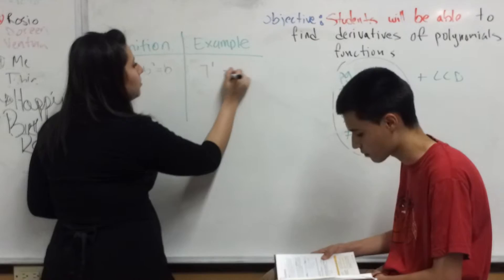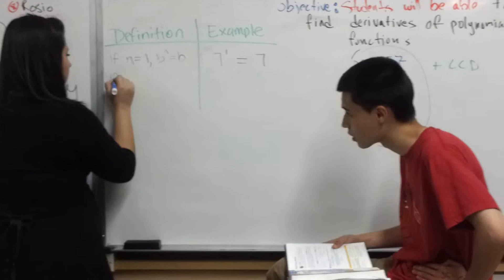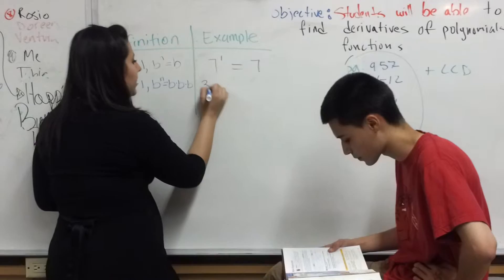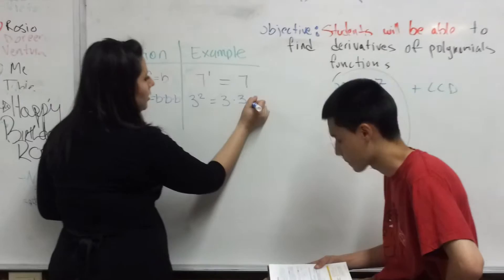if n is greater than 1, then b to the n equals b times b times b... So for example, 3 squared equals 3 times 3, which equals 9.